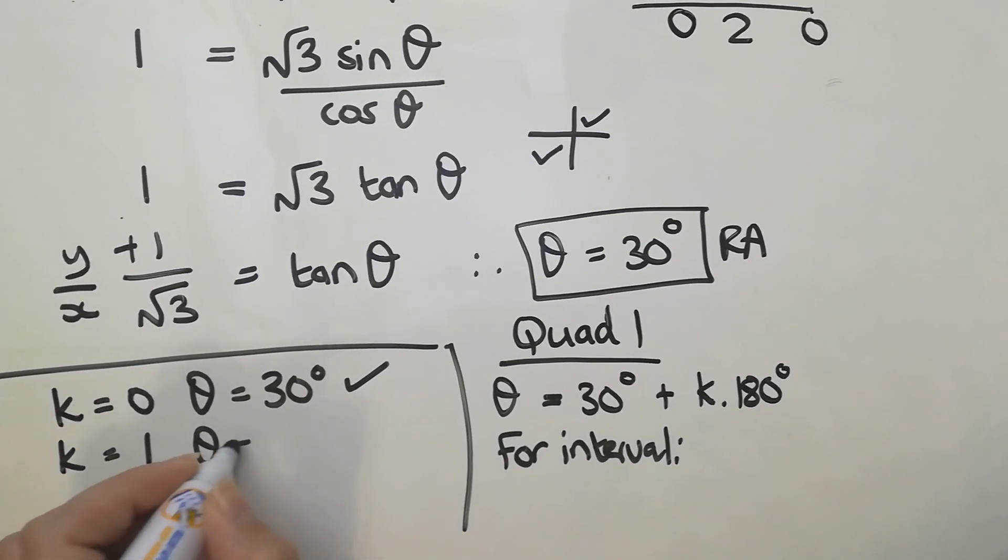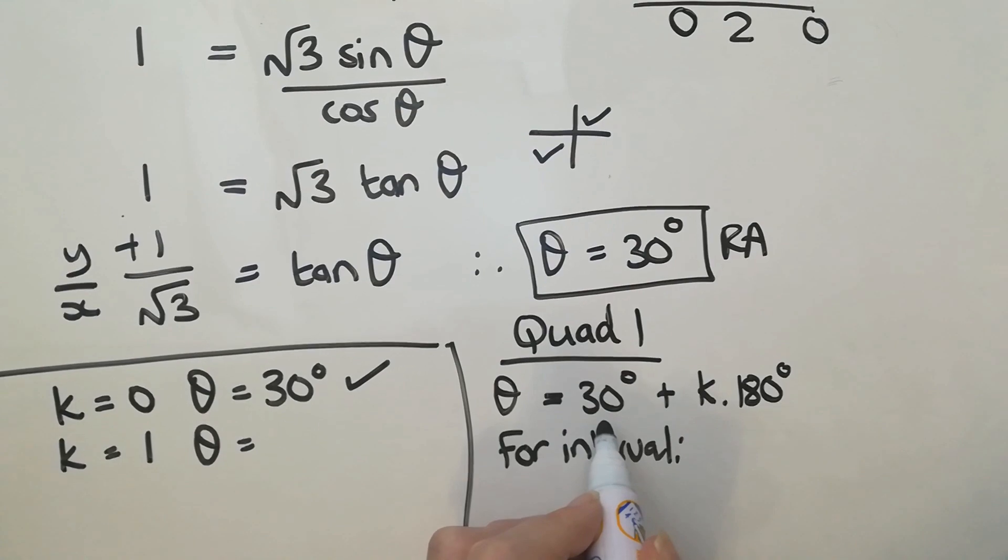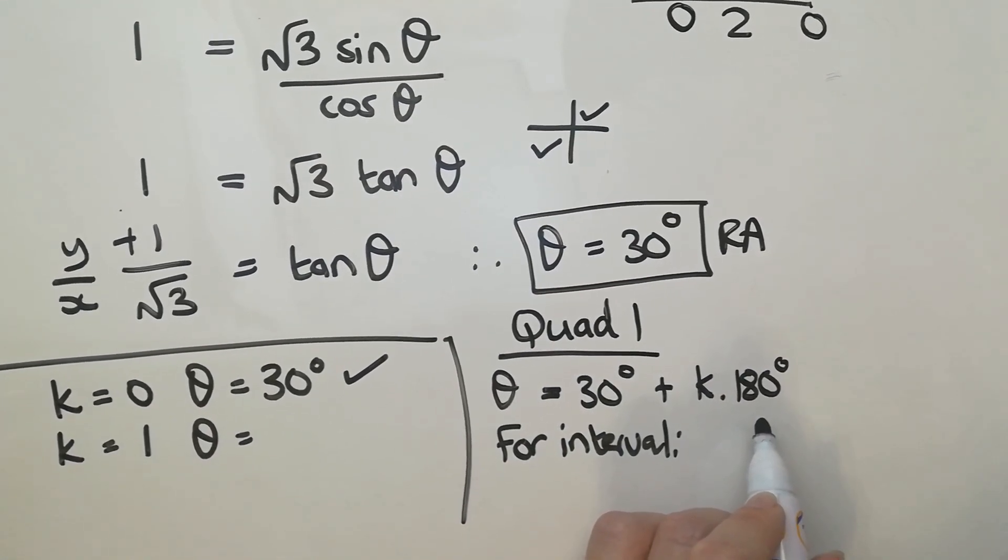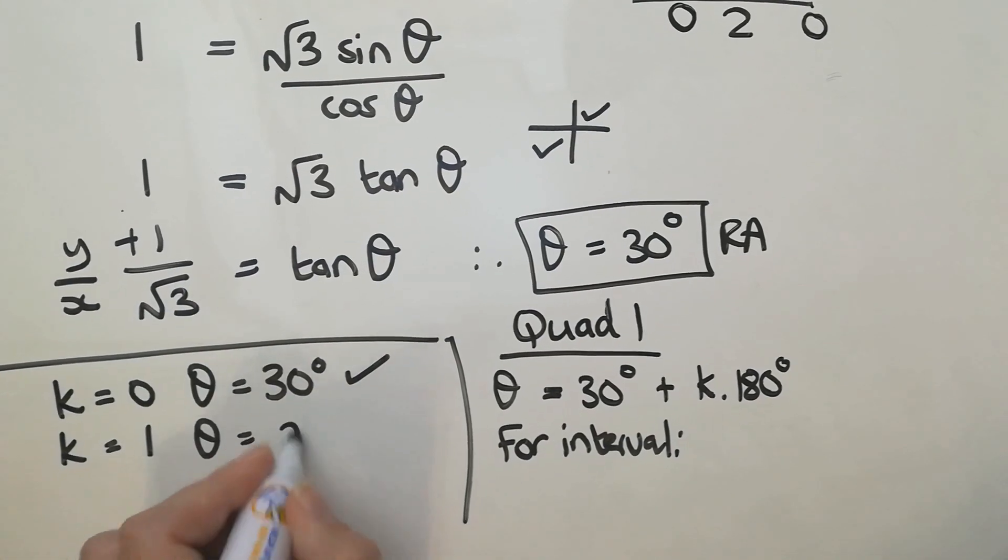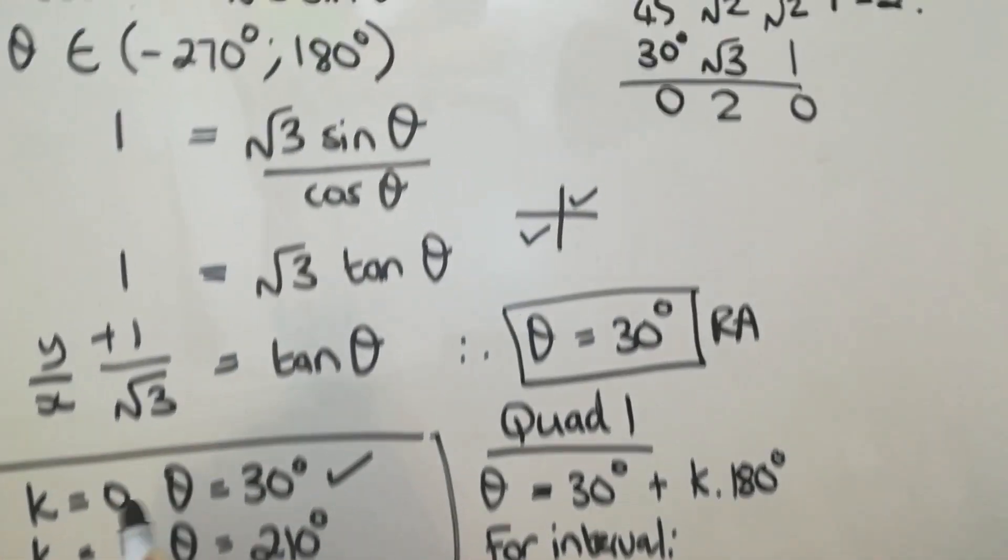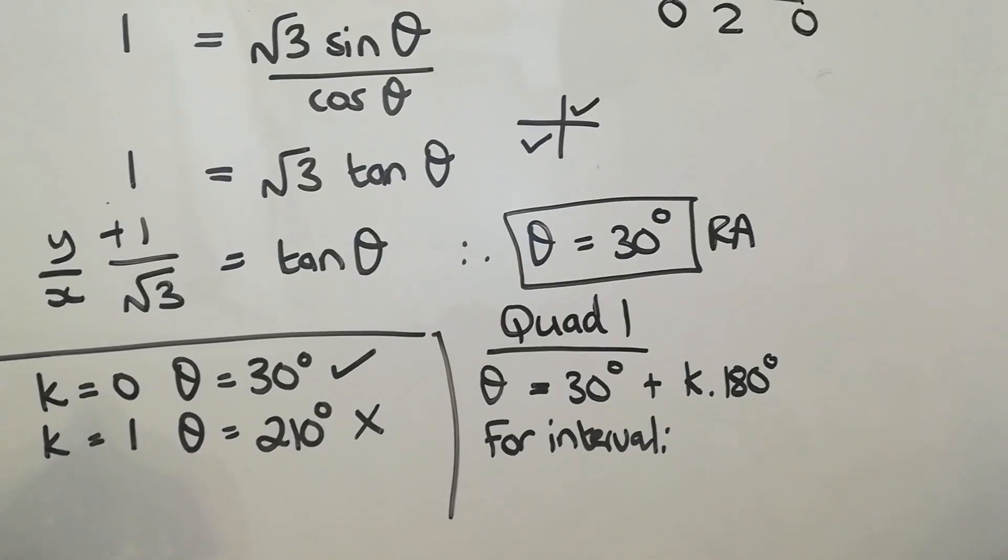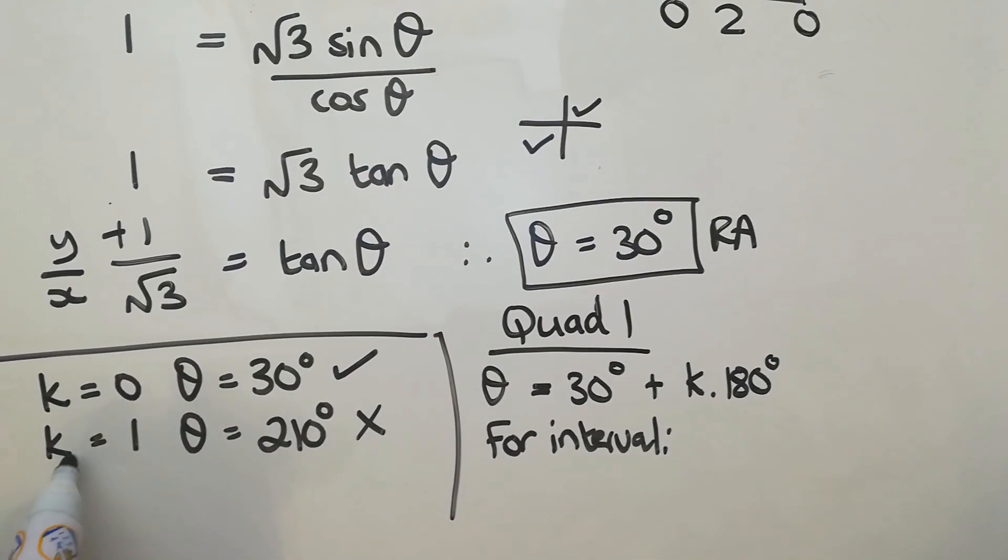For k is 1, we're going to have theta is 30 plus 180, which gives me 210. Does that fit into the interval? No. So that means I'm not going to go any further. I'm not going to now go k equals 2.